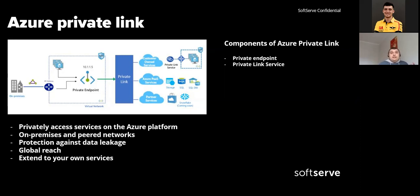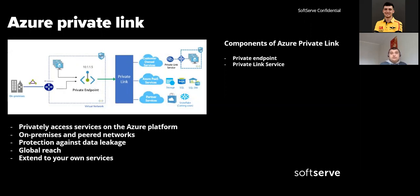There are two key components of Azure Private Link: Private Endpoint and Private Link service. Private Endpoint is a network interface connected to our virtual network, assigned with a private IP address. It's used to connect privately and securely to a service powered by Azure Private Link or a private service that you or your partner might own. Private Link service itself represents our own service powered by Azure Private Link that runs behind an Azure Standard Load Balancer — we need a Standard Load Balancer to enable private link access.